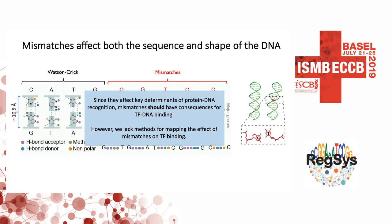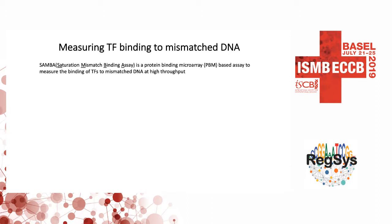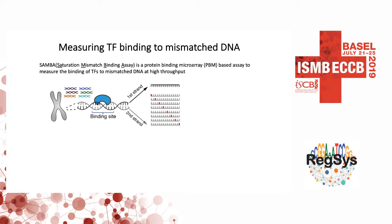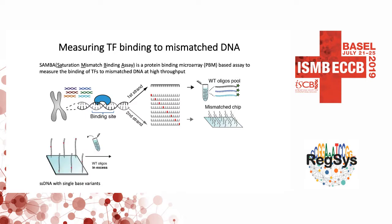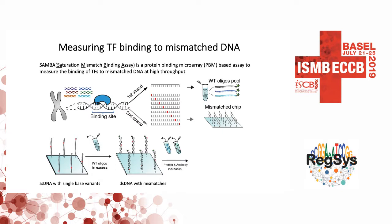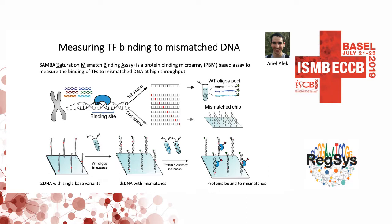However, there are no methods right now that can let us map this. Our lab recently developed a high-throughput measurement using protein binding microarrays to characterize this binding. Briefly, you take any site from the genome, keep one strand as a constant reference strand, and on the other strand generate multiple variants where you introduce mismatches — a non-complementary base at various positions. You do this for all positions within the site and all possible mismatches. You hybridize to get double-stranded DNA with a single base pair mismatch, add protein, and measure the signal. This assay was designed by Ariel Afek, a postdoc in our lab, who carried out most of the experiments.